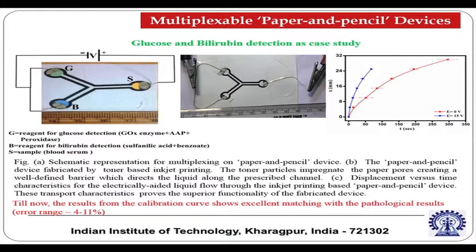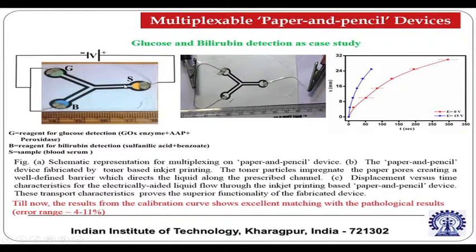Multiple tests can be done on paper-and-pencil devices simultaneously. For example, one platform has reservoir G for glucose detection reagent, reservoir B for bilirubin detection reagent, and reservoir S supplying blood serum. By applying electrical voltage on this platform, blood glucose and bilirubin levels were tested simultaneously using a single blood sample — demonstrating multiple simultaneous tests on a single blood sample using paper-and-pencil microfluidics.